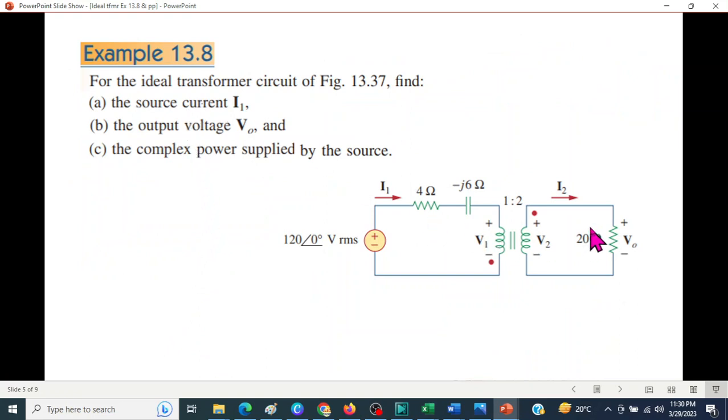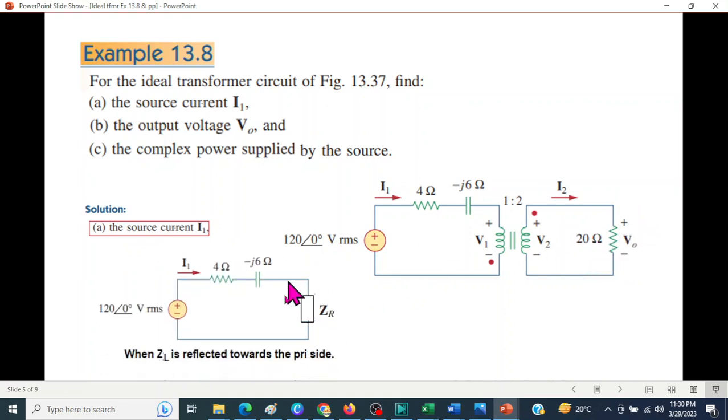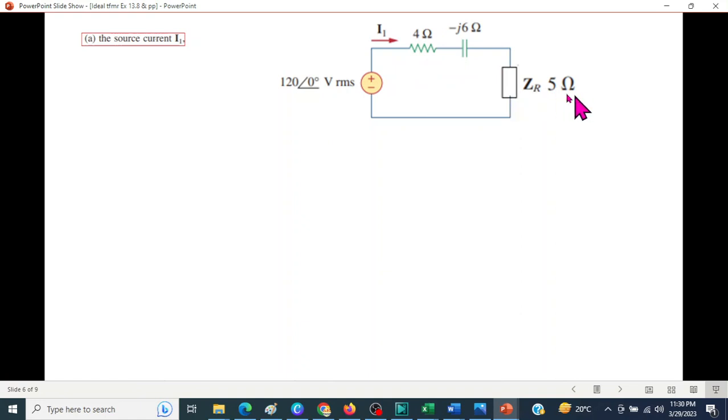Let's see the question now. First example, this is the circuit given. We have to find current I1, we have to find output voltage V2, and we have to find the complex power supplied by the source. To find the current, we have to reflect this load to the primary side. Reflected it will be ZR, and ZR will be actually this load divided by N square, N is 2. It will be 20 divided by 4 is equal to 5 ohm. And now, since we have found ZR, we can easily solve for current, voltage divided by total impedance. Use your calculator in complex mode, you will get the answer directly. Current we have found.